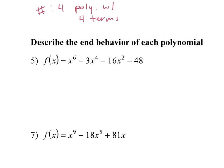So what term are we looking at here? X to the six. Is this positive or negative? Positive. And is it even or odd? Even. So since it's positive, we know it's going to end going up. Does even mean that they're going to go in the same direction or opposite directions? Same direction. So we have up and up.